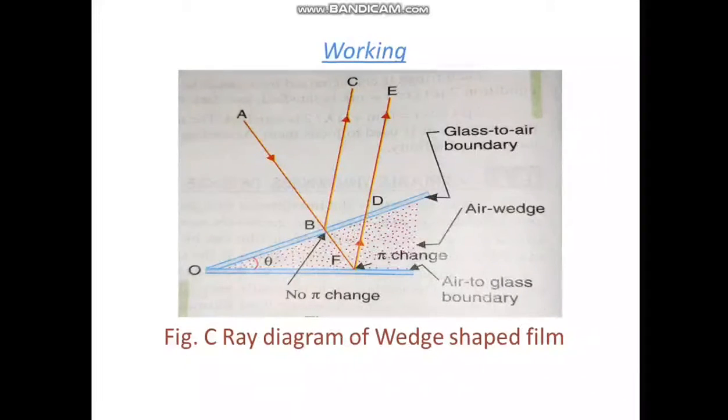It is reflected from the glass to air boundary at the top of the air film. Part of the light is transmitted through the air film and gets reflected partly at the air to glass boundary as shown in this figure.